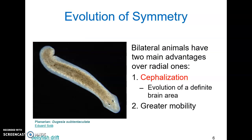The advantages of bilateral symmetry: the first is cephalization — the evolution of a definite brain area at the front end, plus sensory structures like eyes and ears. This leads to greater mobility; movement can occur in a constant direction, in the direction of the head. This is in contrast to jellyfish, radially symmetric organisms, that just drift.